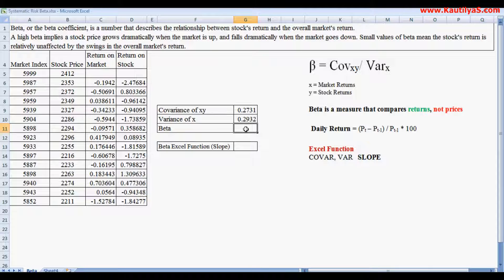And now beta equals covariance of XY divided by variance of X, which gives us 0.932.